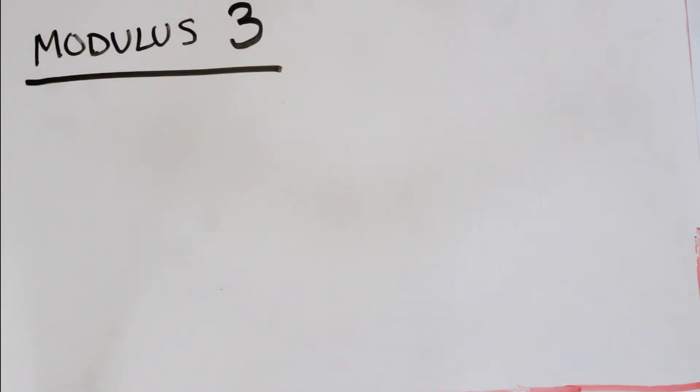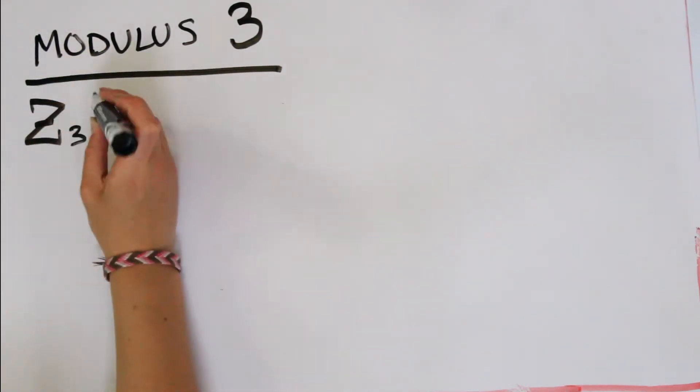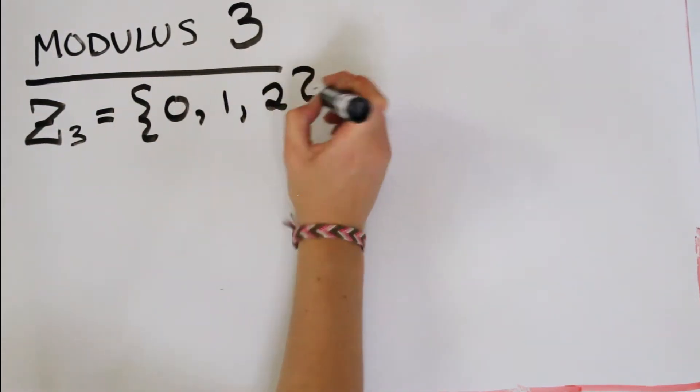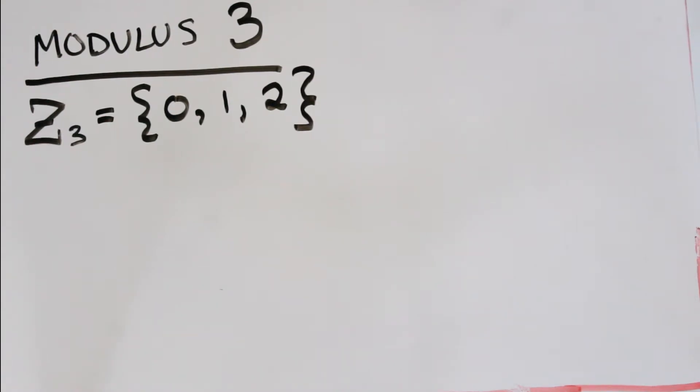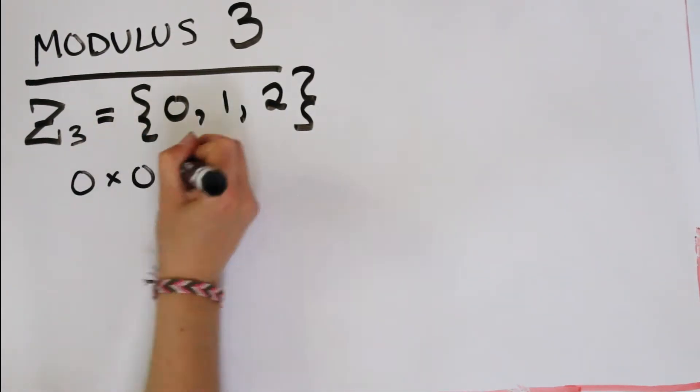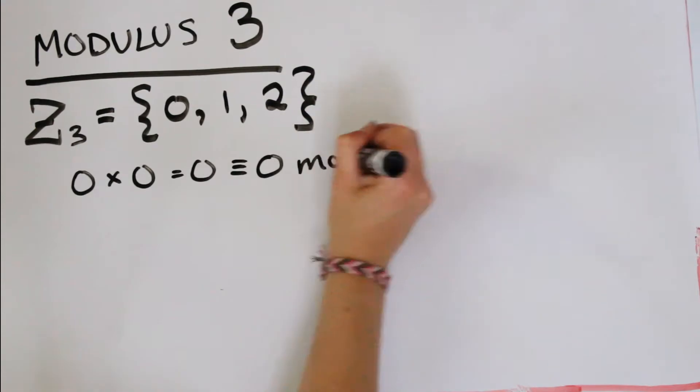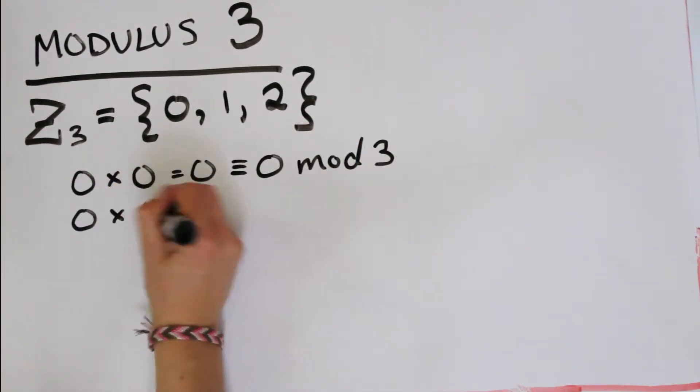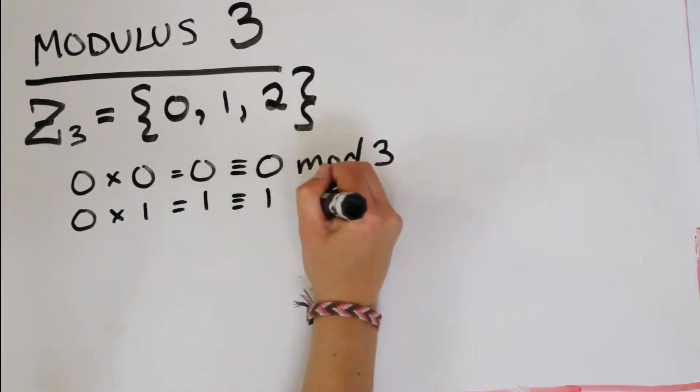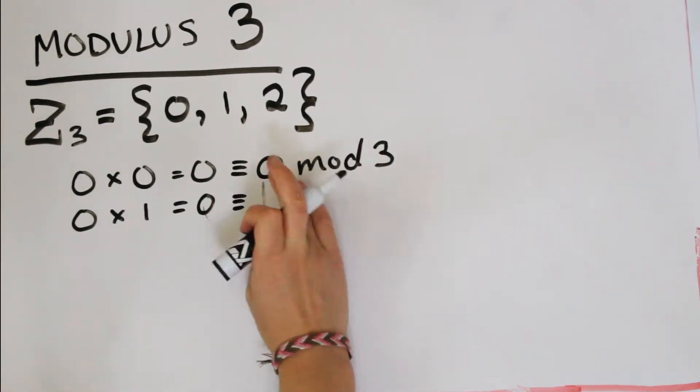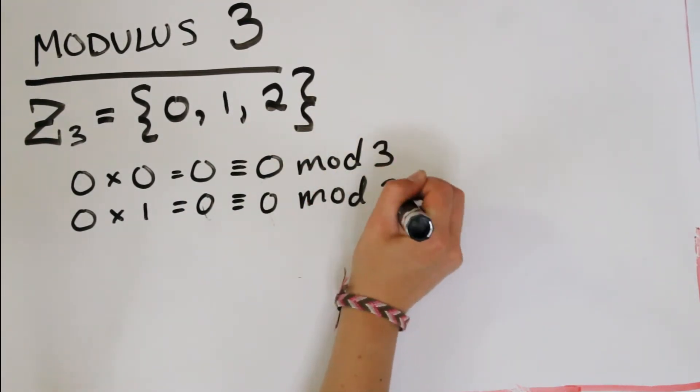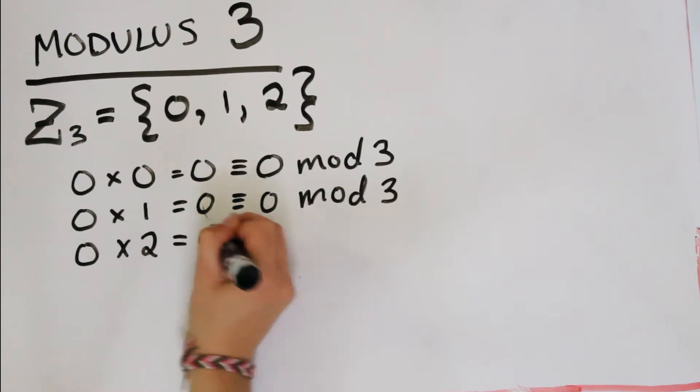We can see this if we consider modulus 3. This one's slightly less comfortable for people, but we know that in Z_3, so that there's that notation again, we have possible remainders 0, 1, and 2. Let's consider any remainder multiplied by the remainder 0. We get 0 no matter what we multiply by 0, obviously, and that's all congruent to 0 mod 3.